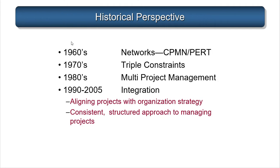In the 1970s, focus shifted to the triple constraint — the project schedule, the project budget, and scope. It's a consideration of what the project will deliver, when, and how much it will cost. In the 1980s, concerns arose about managing multiple projects simultaneously — multi-project management — because project management increasingly became the primary means by which companies got work done.